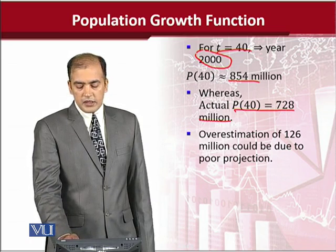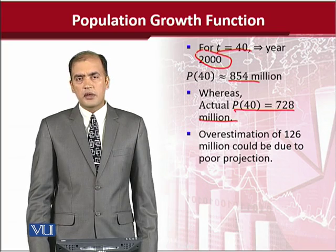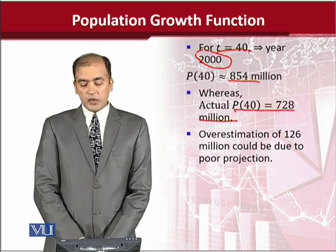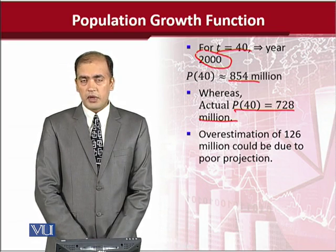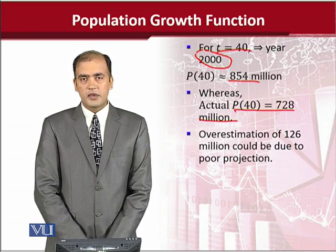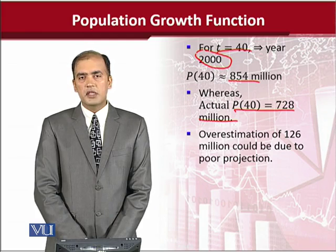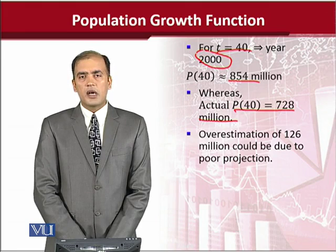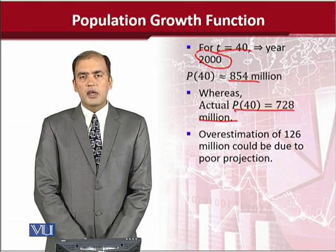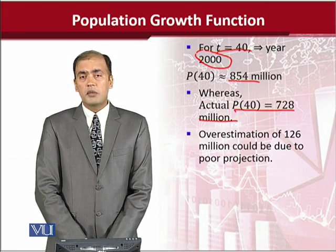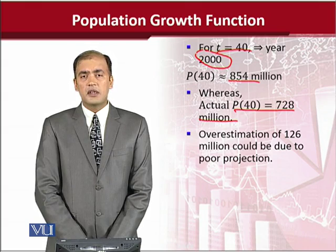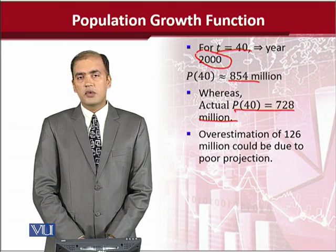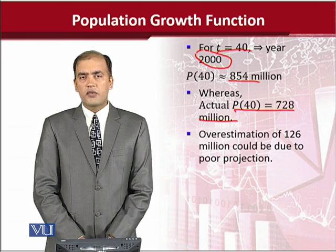In the real world, during the year 2000, in actual terms, the population was found to be not 854 million but rather 728 million. There was a disparity between the actual and forecasted population. We can attribute this discrepancy to uncertainty in real life — events such as population planning, increased death rate, mortality rate, or birth rate all affect the population. Still, our function helped us get at least a rough idea of the population.